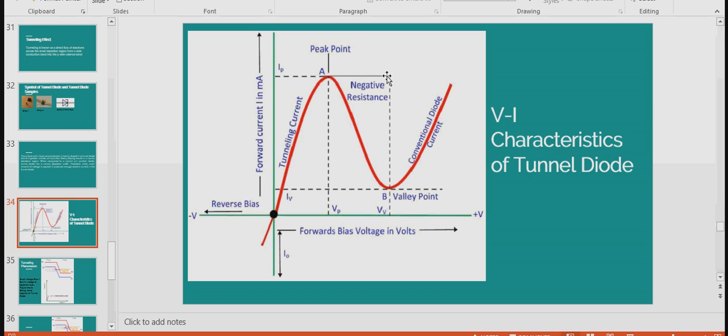This region is called as negative resistance region. What do you mean by positive resistance? If voltage increases, current increases. If voltage decreases, current decreases, it is said to be positive resistance. If voltage increases, current decreases or if current increases, voltage decreases, it is said to be negative resistance. Here voltage increases from peak point to valley point, but the current decreases from peak point to valley point. So this region is called as negative resistance region. Once it reaches the valley point, it will behave like an ordinary conventional P-N junction diode.